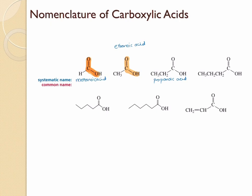On the fourth one you have a total of four carbons — one, two, three, four — so it's going to be butanoic acid. One thing to keep in mind when giving the numbering for carboxylic acids: this carbon at the carboxylic acid is going to be number one. But in this case you don't have to give the numbering since we do not have any substitution on the carbons.